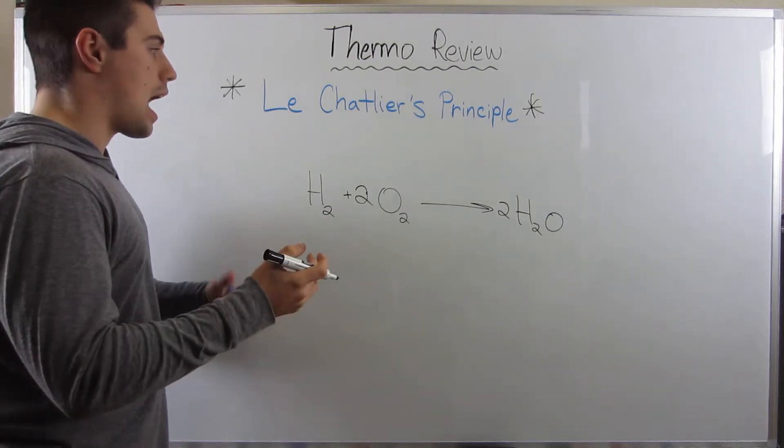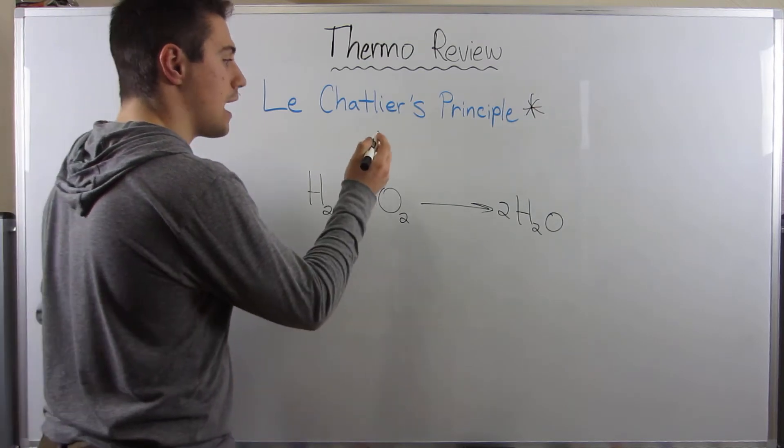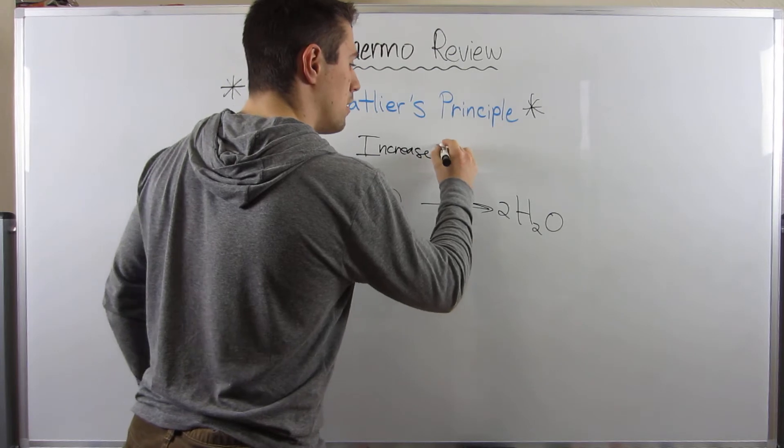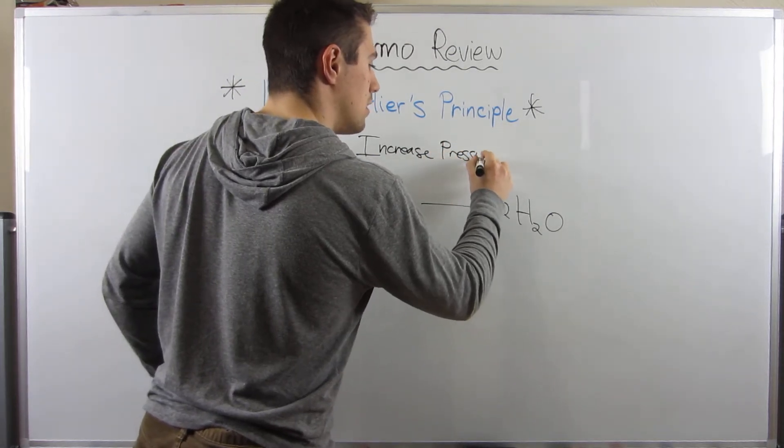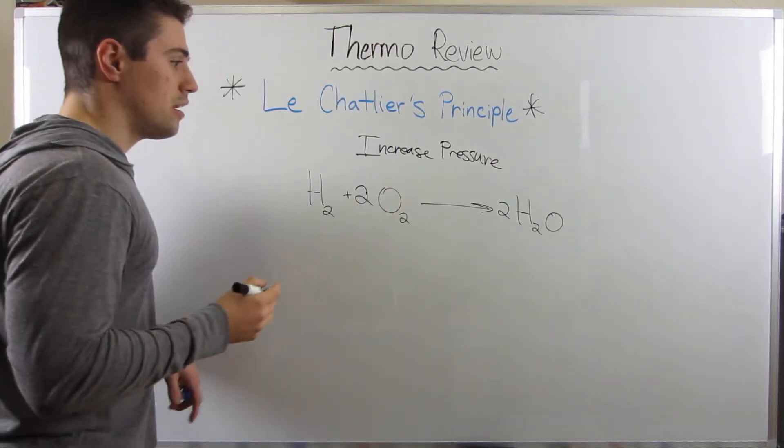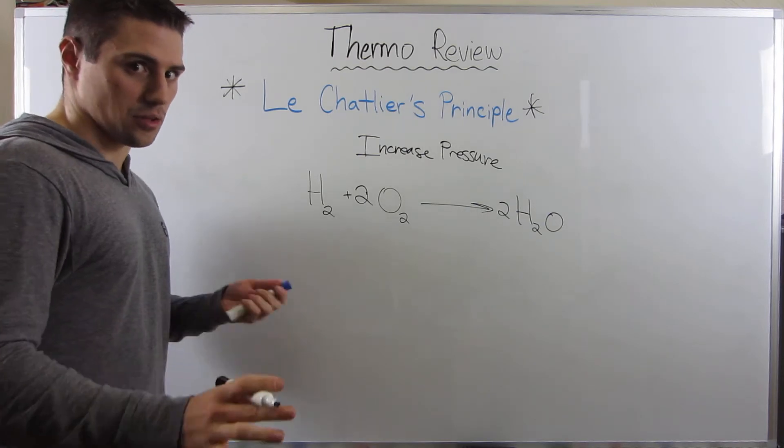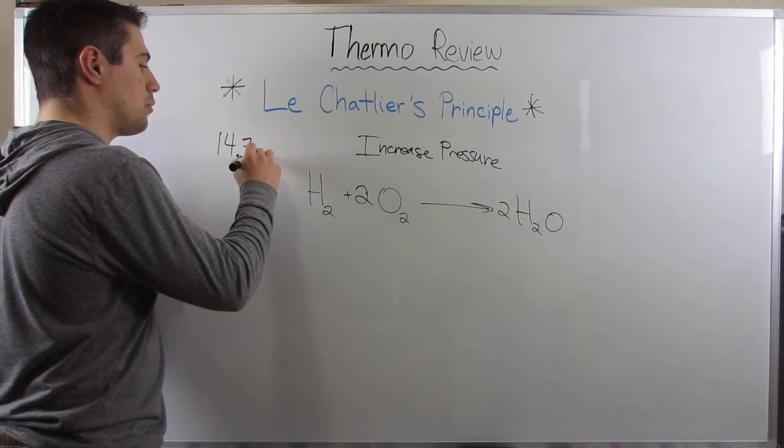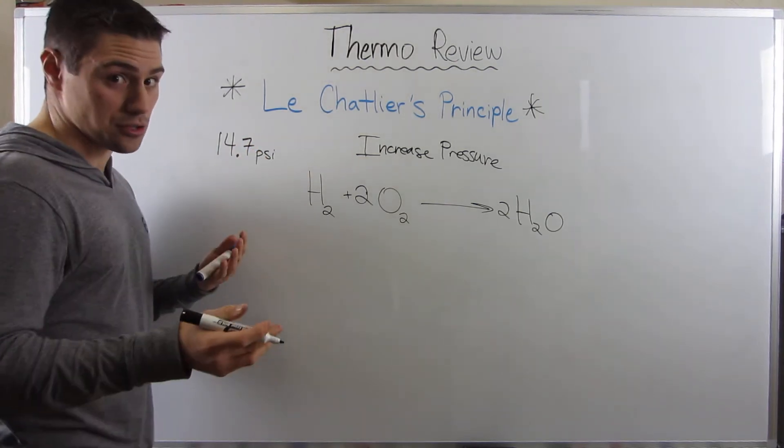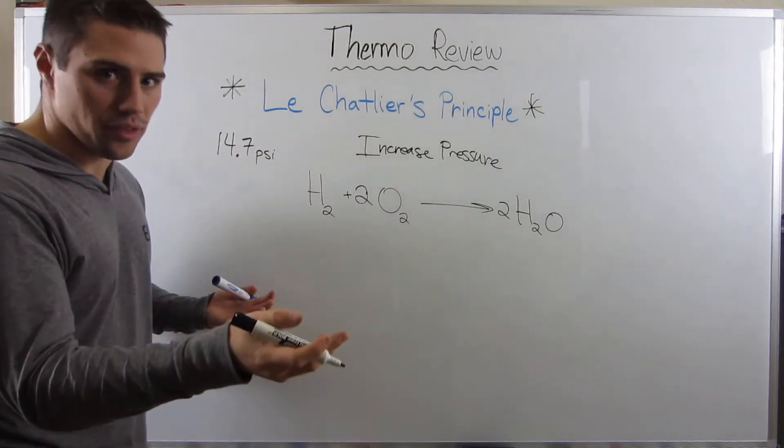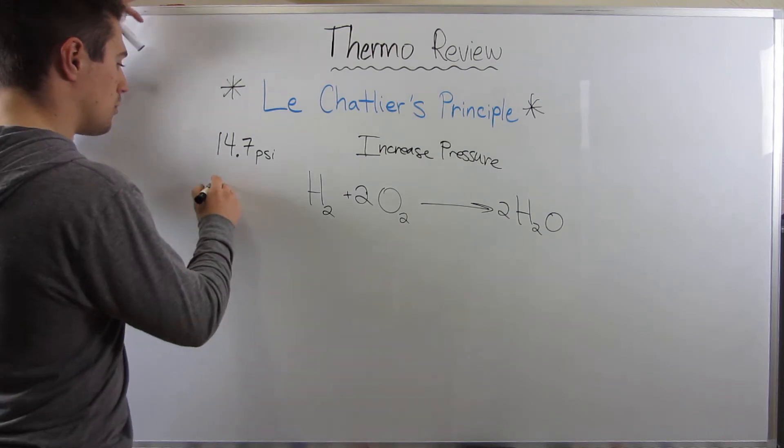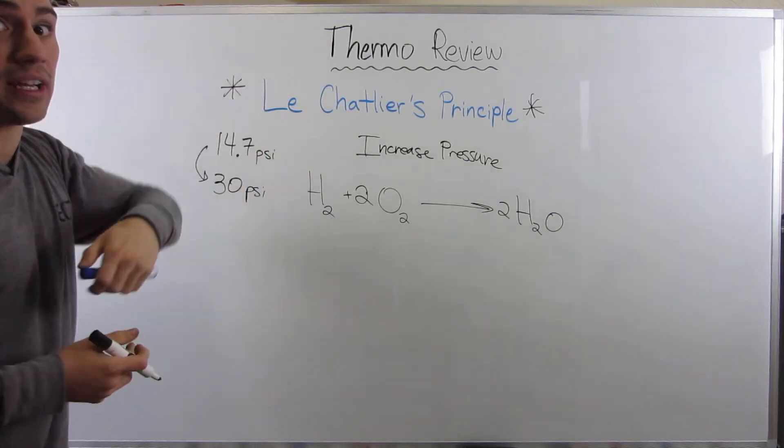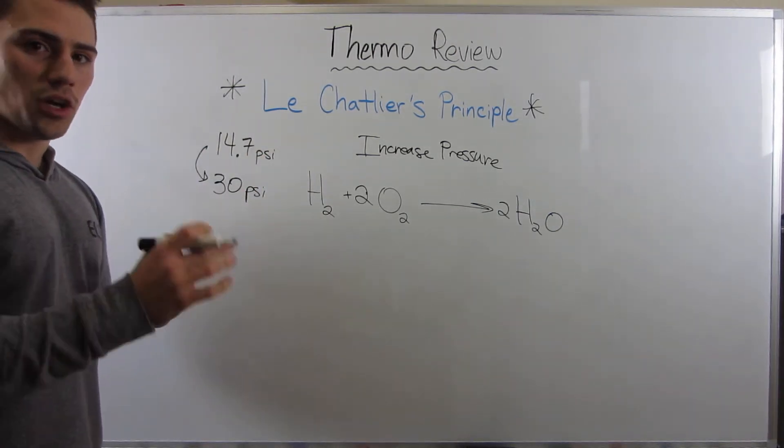Let's say the disruption I introduced is let's increase the pressure for this equilibrium. Let's just say we're running this reaction at 14.7 PSI, this is atmospheric pressure. Let's just say we doubled that, we're somewhere almost around 30 PSI. So we're increasing the pressure, we're cranking it up.